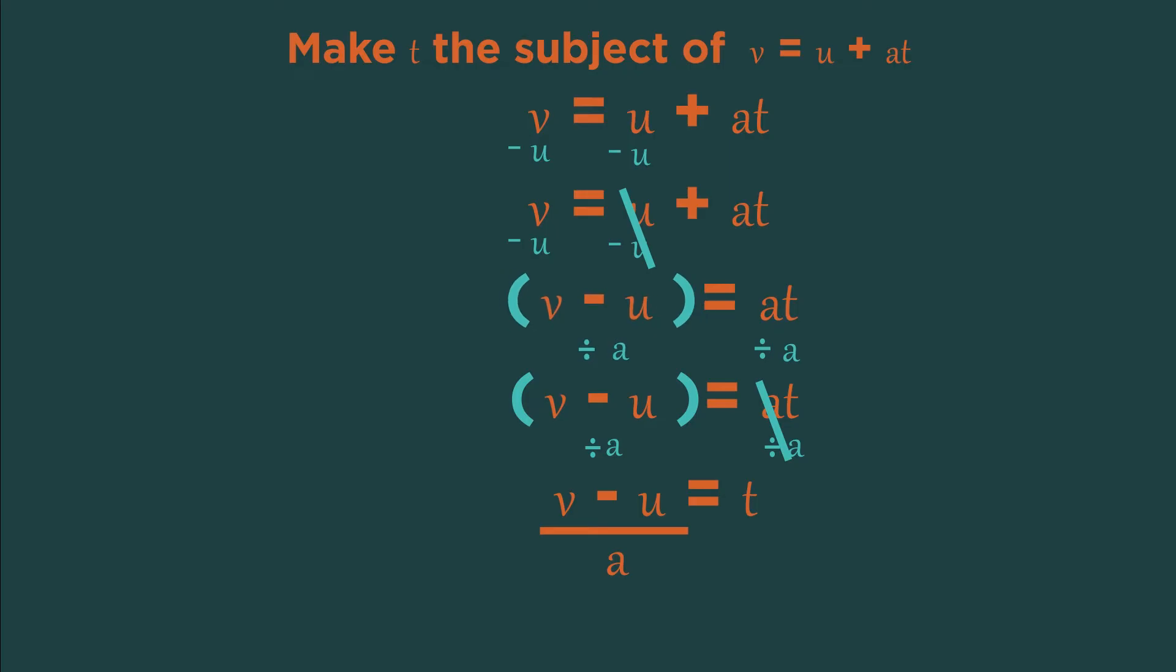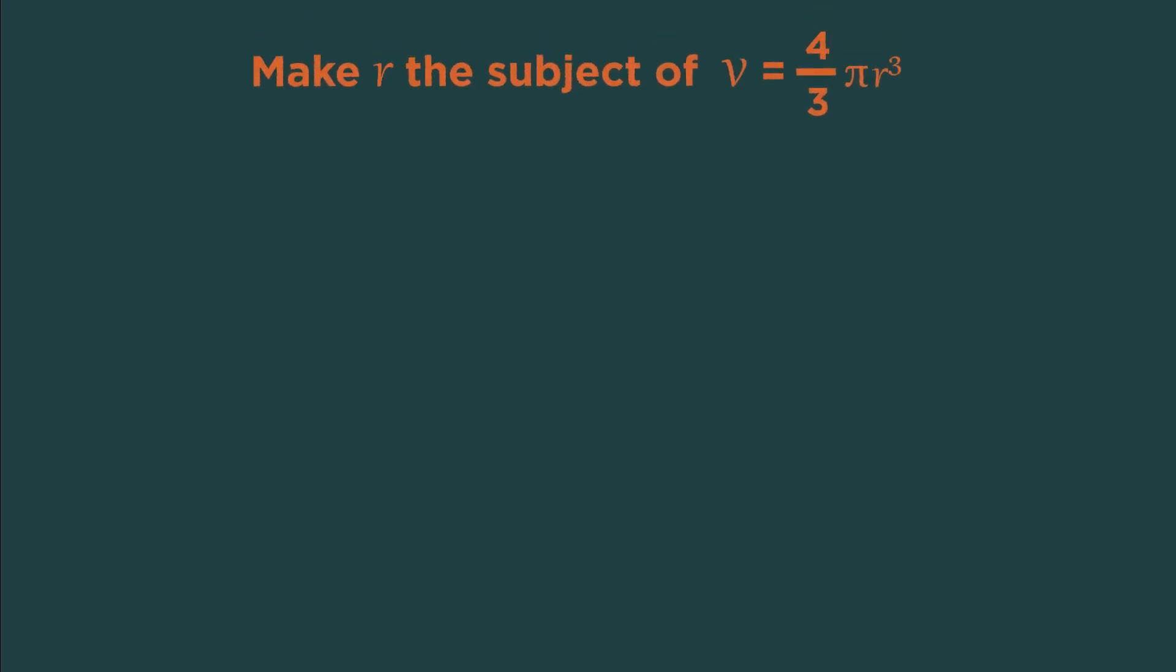Here's another example. Remember that pi is just a number. Don't let it stress you. It's also easier to treat the 4 and 3 as separate parts. Start by multiplying both sides by 3 so that they cancel each other out on this side.